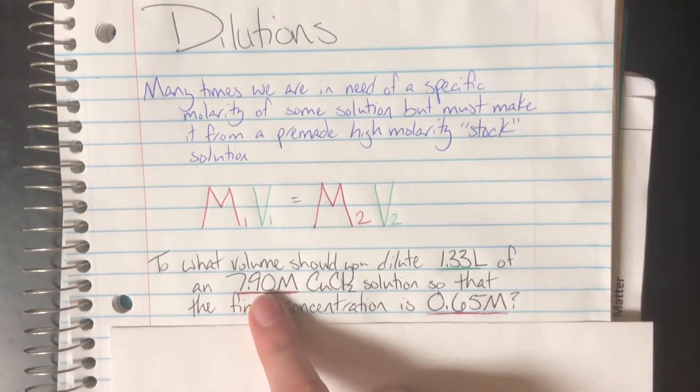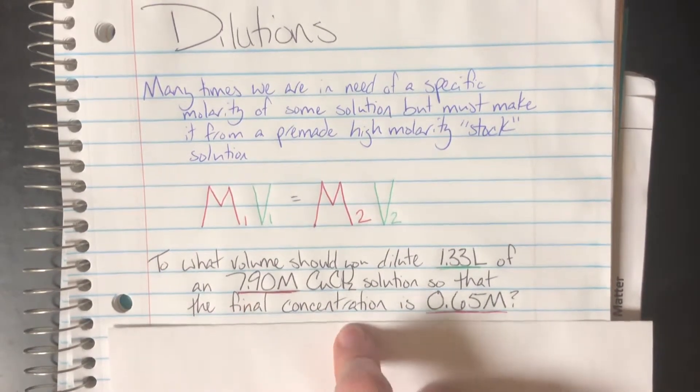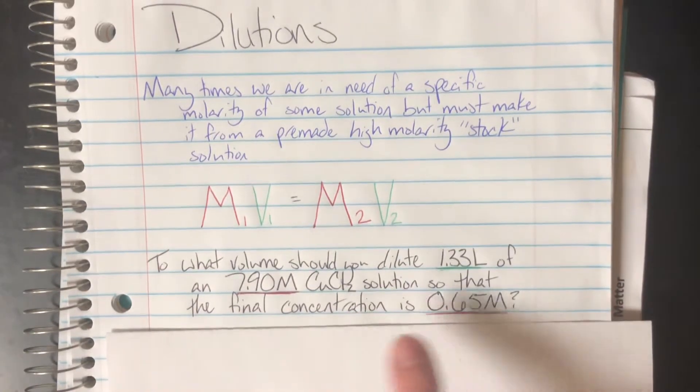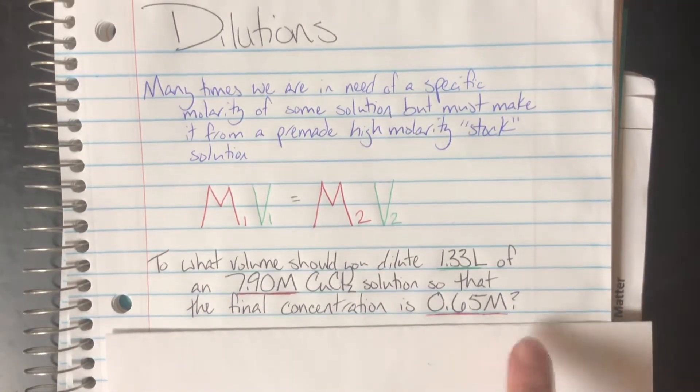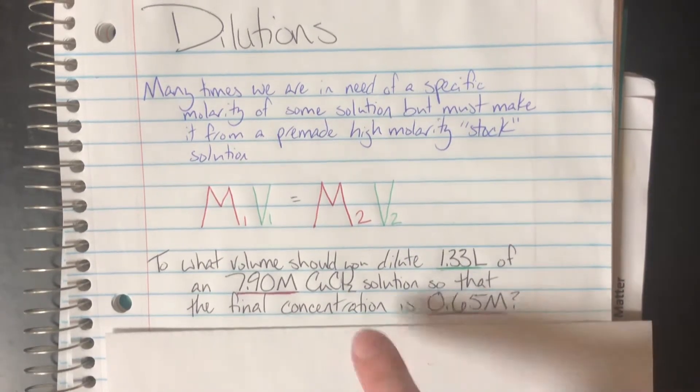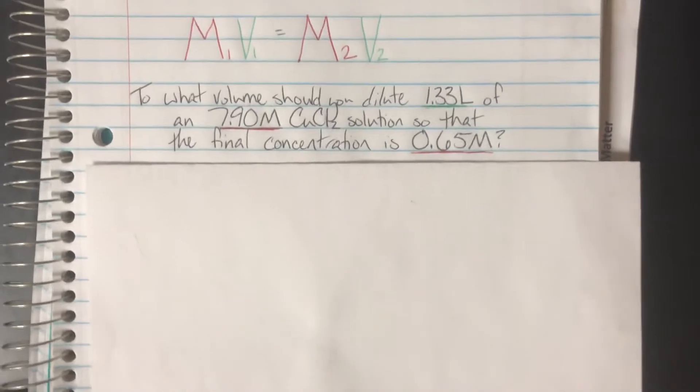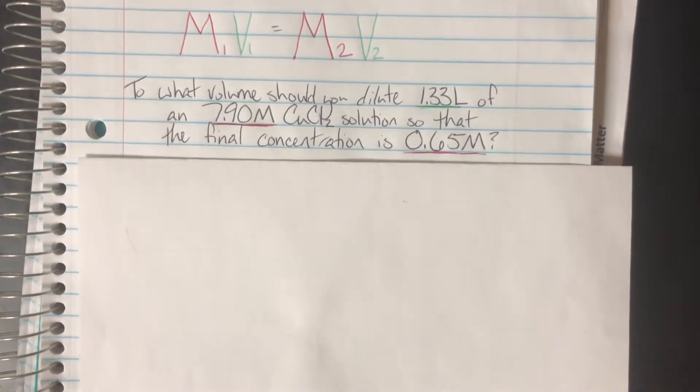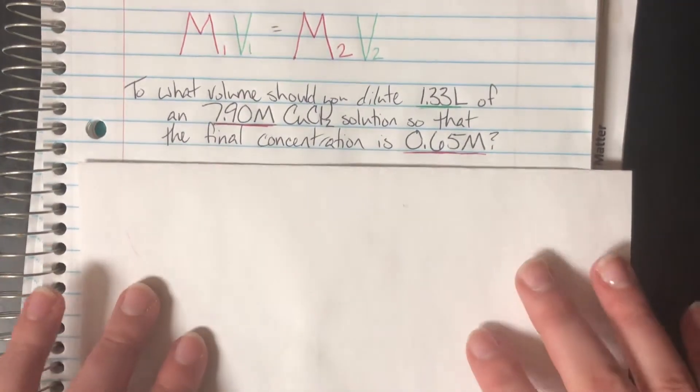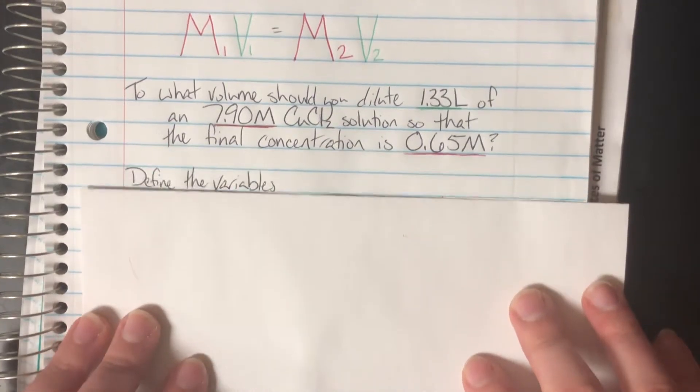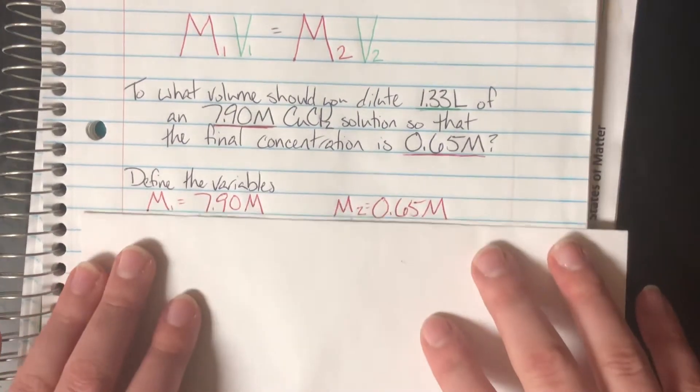So that my final concentration is 0.65 molar. Final concentration, again, very nice, very explicitly stated that this was going to be my M2. And I went ahead and I underlined it with what it was actually going to be attached to, so I can go ahead and plug it in and define my variables.